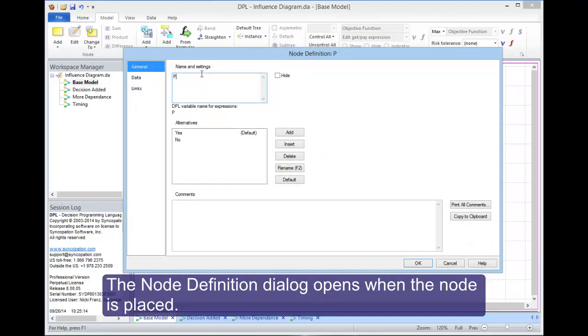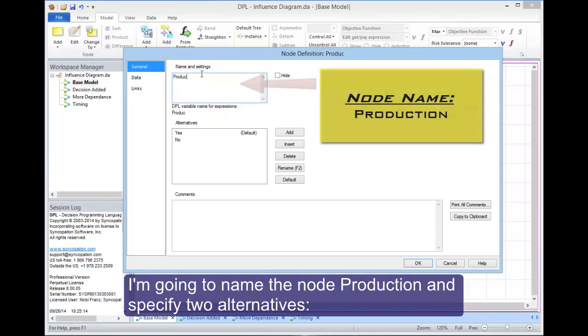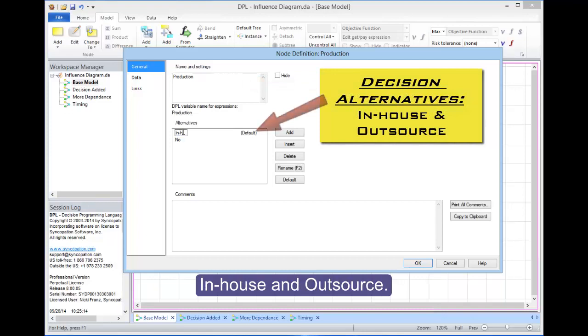The node definition dialog opens when the node is placed. I'm going to name the node production and specify two alternatives, in-house and outsource.